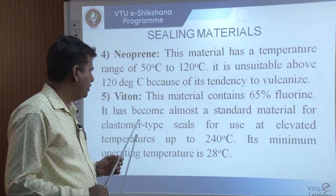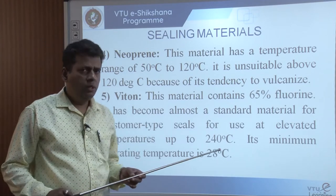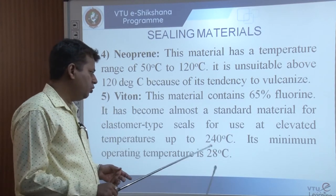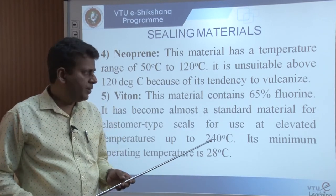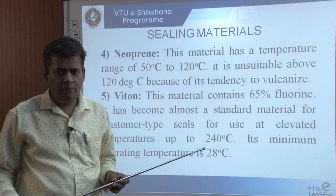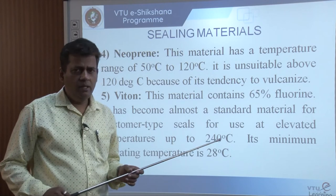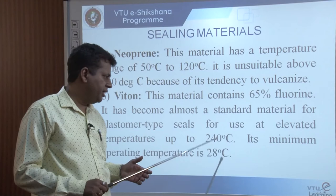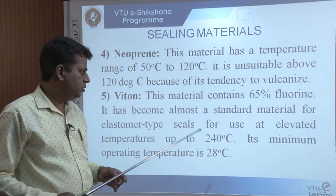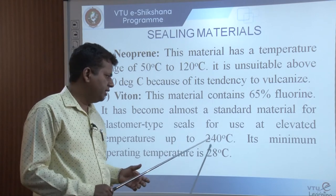Viton, as the name suggests, consists of approximately 65% fluorine. Fluorine improves the high-temperature properties of any material. Viton can work up to 240°C and as low as minus 28°C. The presence of fluorine acts as a thermal barrier and prevents disintegration of the elastomer. However, if the temperature exceeds 240°C, the fluorine disintegrates, generating harmful fumes that are injurious to health if inhaled. So this material is recommended only for applications where temperature remains below 240°C.